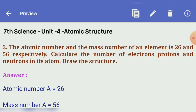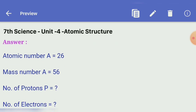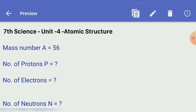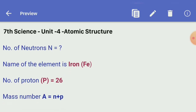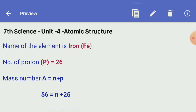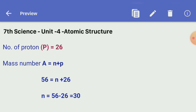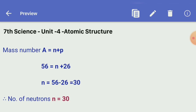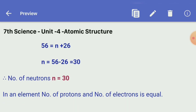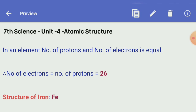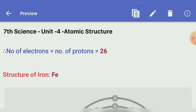Second question: the atomic number of an element is 26 and the mass number is 56. Calculate the number of electrons, protons, and neutrons in its atom and draw its structure. Answer: the element is iron (Fe). Number of protons = 26. Mass number A = neutrons + protons, so 56 = N + 26, therefore neutrons = 56 − 26 = 30. In a neutral atom, number of electrons equals number of protons = 26. Summary: atomic number 26, protons 26, neutrons 30, electrons 26.